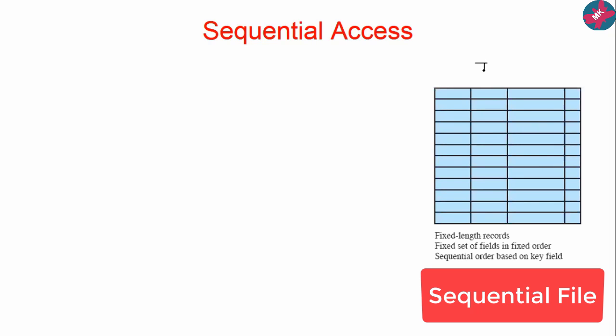Let us start with sequential access. In a particular file there is a tabular-like structure. In sequential files there will be fixed-length records, like we have done in databases — we create fields, set the size of the fields, and arrange data in a sequence. This sequence is based on some key field, like a primary key, and based on that primary key all rows are accessed one by one.